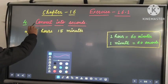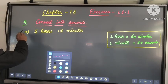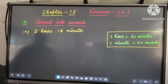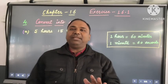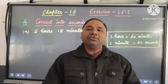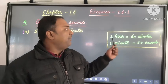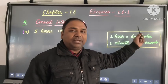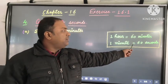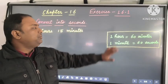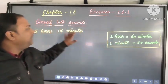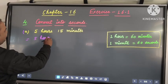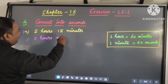Question number 4 says: convert into seconds. The first question, 4a, is 5 hours 15 minutes. We have to convert them into seconds. You can see behind me I have written a few important points: 1 hour is equal to 60 minutes, and 1 minute is equal to 60 seconds. So we will use these two points. First we will write down 5 hours plus 15 minutes.